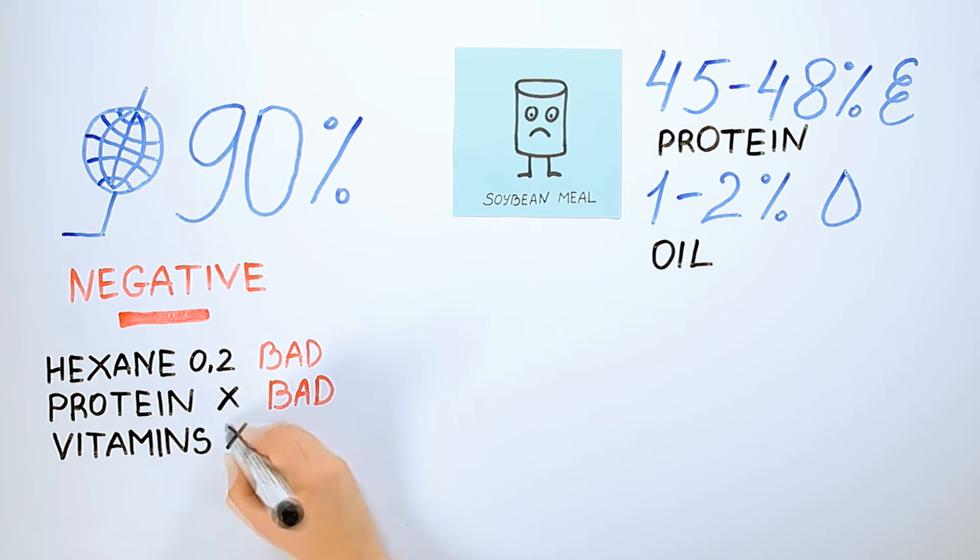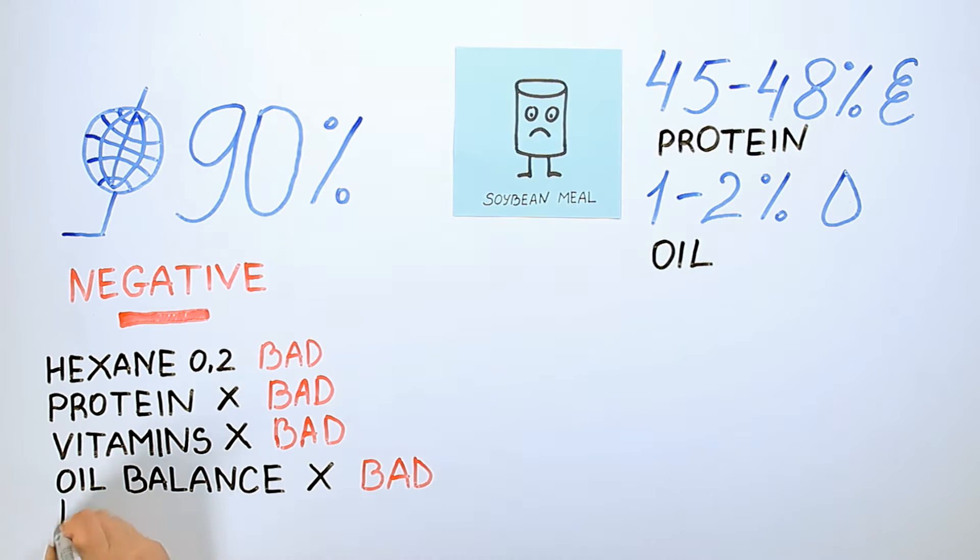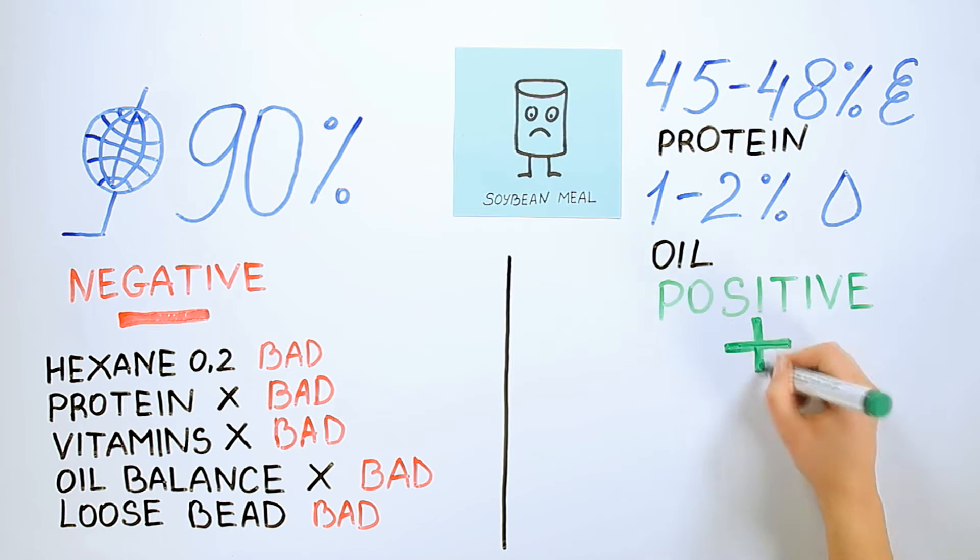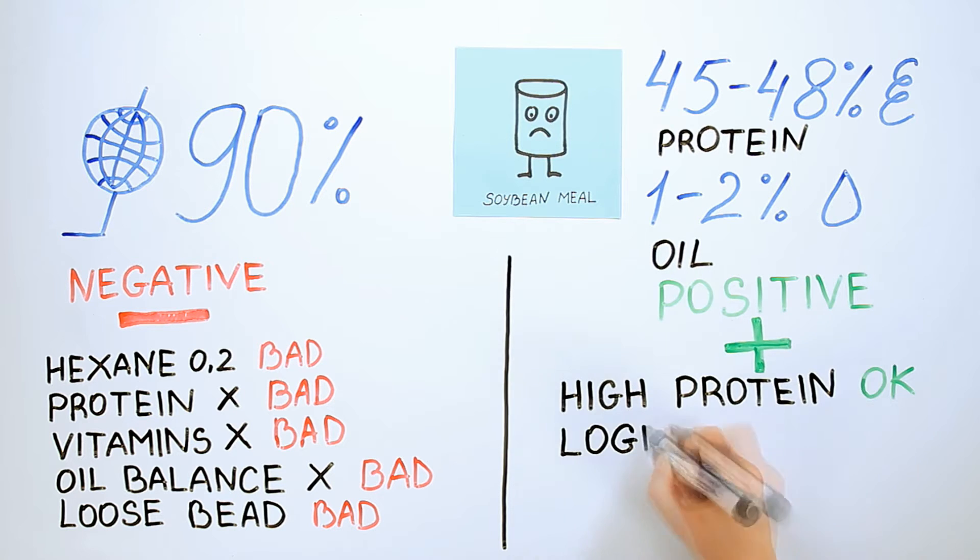Low protein digestibility. Removing the oil means all oil-soluble vitamins and nutrients are removed. The complexity of the input of oil in animal feed leads to loose pellets as a result of feed granulation. High protein content and good transportation and storage qualities are advantages.